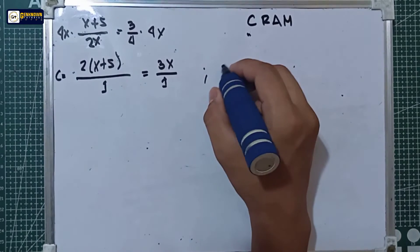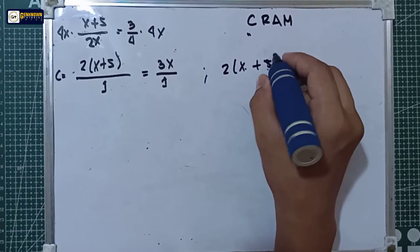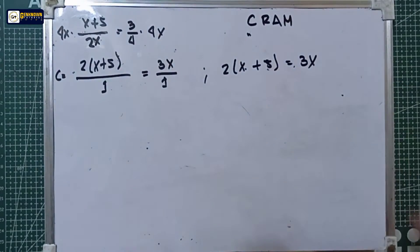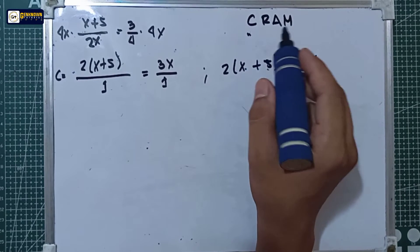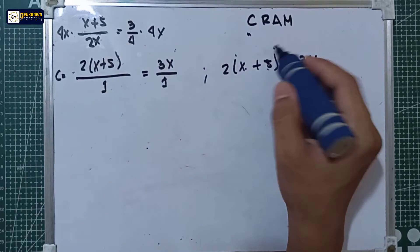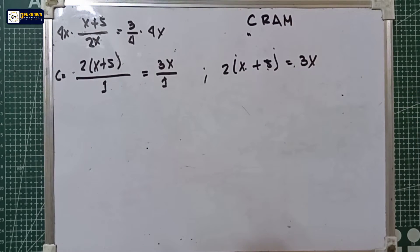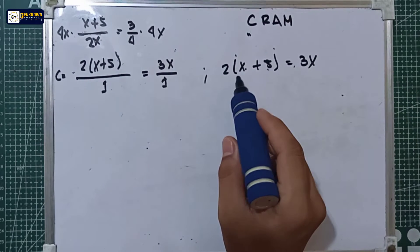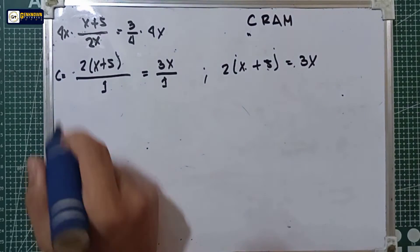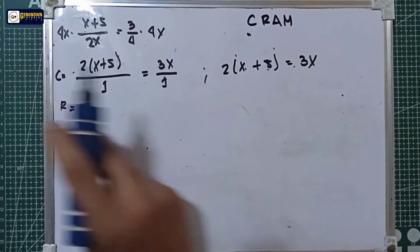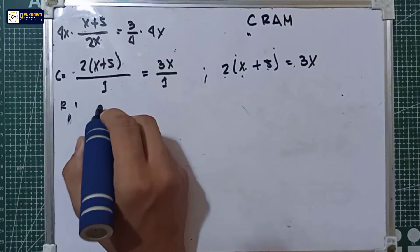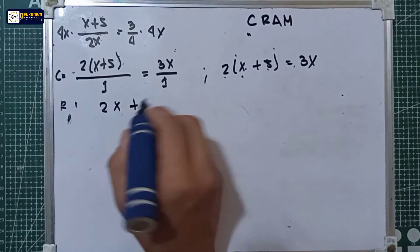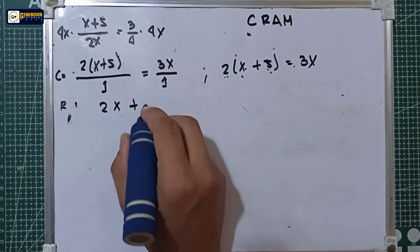That gives us 2x + 5 = 3x. Next is letter R — remove all grouping symbols. We need to remove the parenthesis by distributing the 2, so R gives us: 2 multiplied by x is 2x, plus 2 multiplied by 5 is 10, which equals 3x.